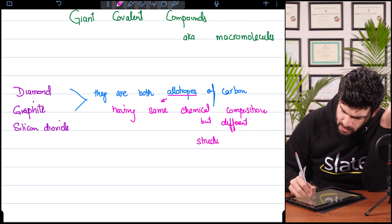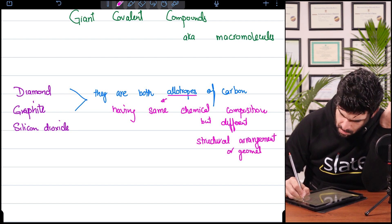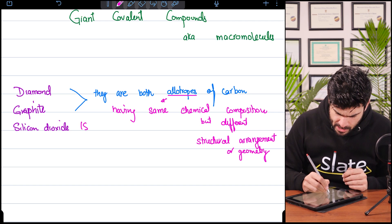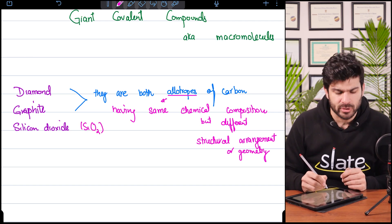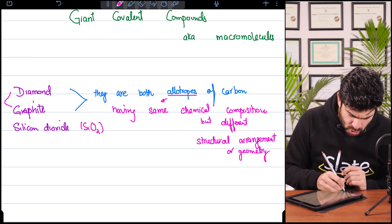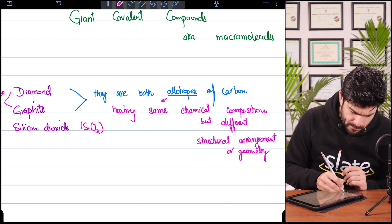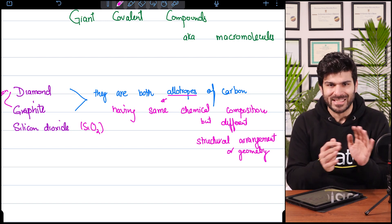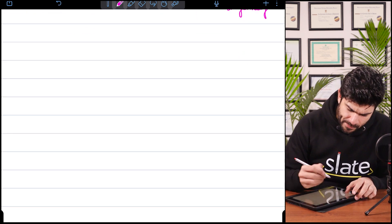The last is silicon dioxide which is SiO2, made of silicon and oxygen. Diamond and graphite are made just of carbon. All we need to know is their structure and properties. So we start off with diamond.